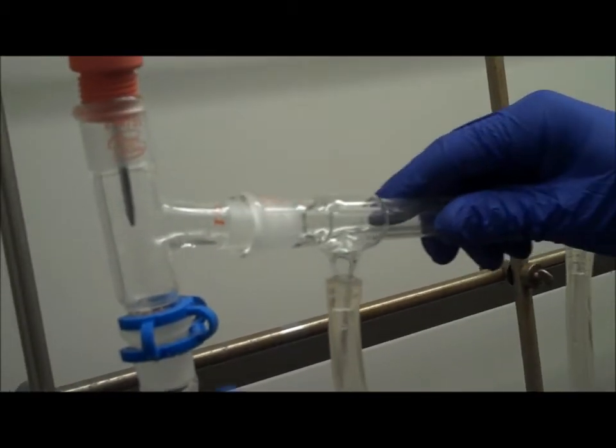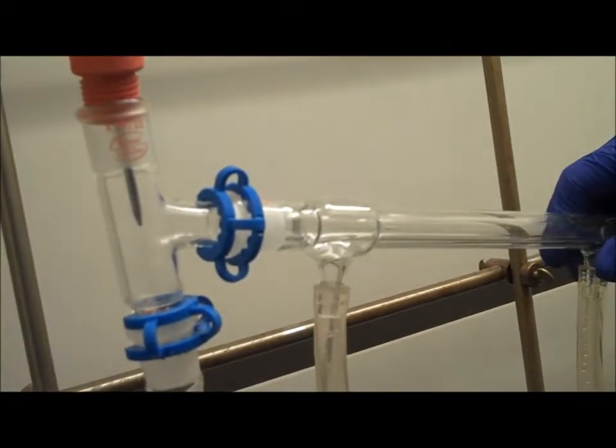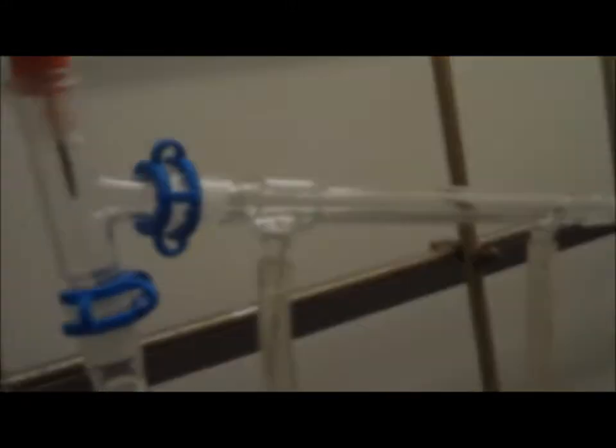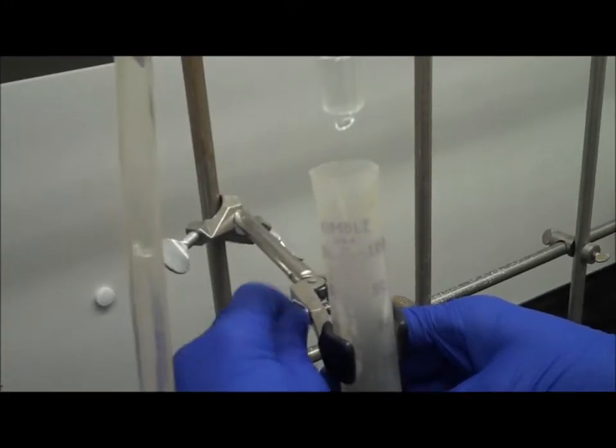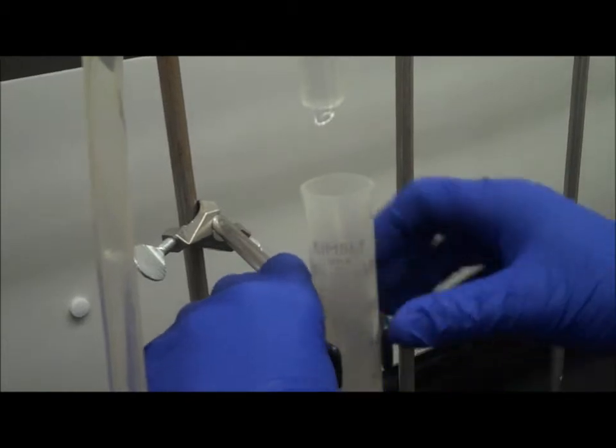We're connecting all glasswork using a clip securely attached here. Next, connect a 100 milliliter graduated cylinder underneath the spout to collect the distillate.